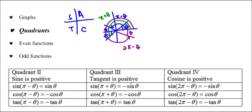We could do the same thing with cos and tan. Cos is negative in quadrant 2 and quadrant 3 — that's where you get negative cos — and positive in quadrant 4. Tan is negative in quadrant 2 and 4, so that's where you get negative tan, and positive in quadrant 3. That's how we get these co-function identities from the quadrants.